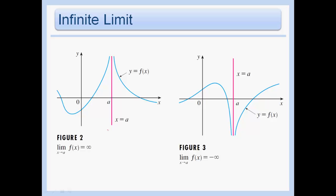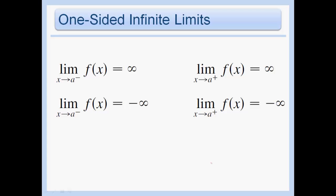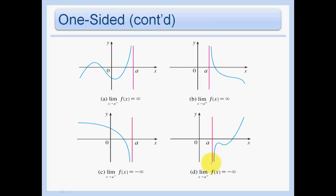In figure 2, we see that the limit as x approaches a from both the left and the right is going off to infinity, so we say the limit as x approaches a of f(x) equals infinity. And in figure 3, we can see that from both the left and the right at x equals a, we're going to negative infinity. We can also have one-sided infinite limits, which we'll see in the next slide.